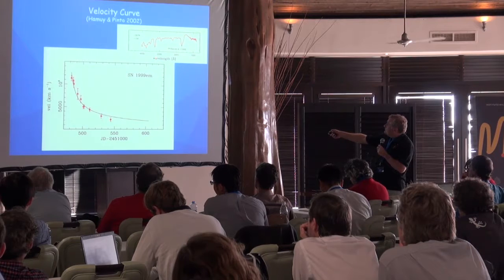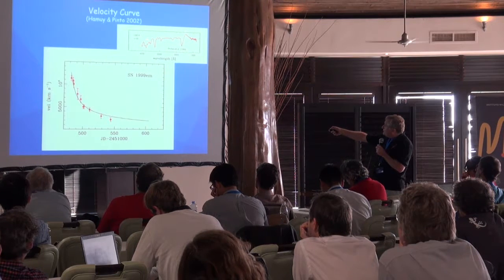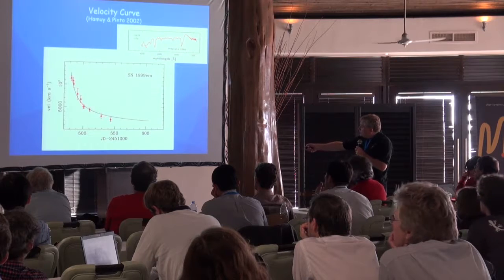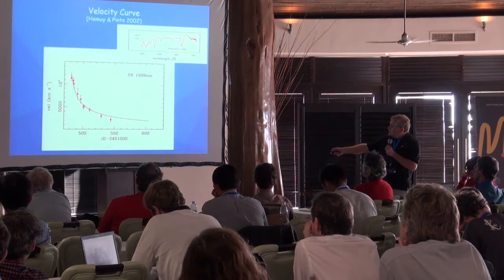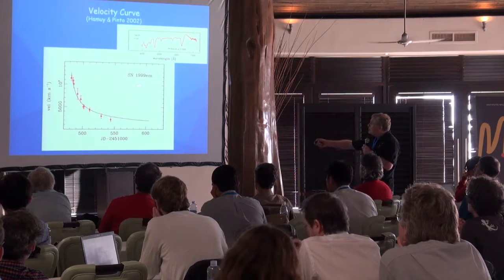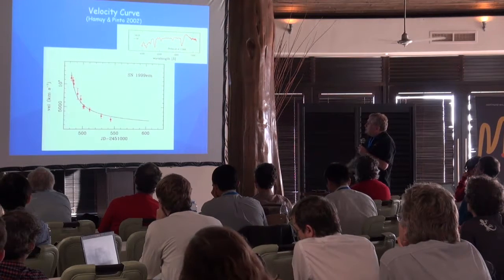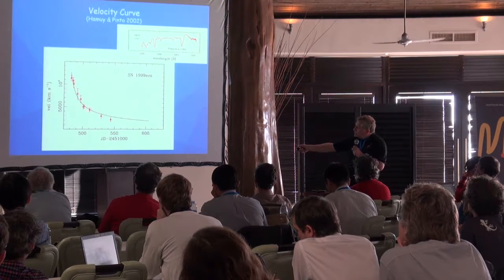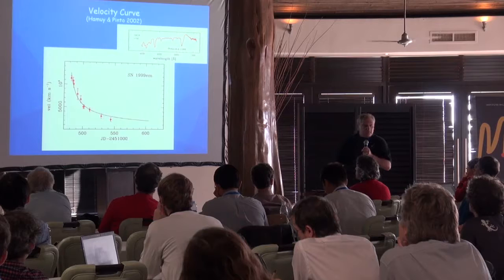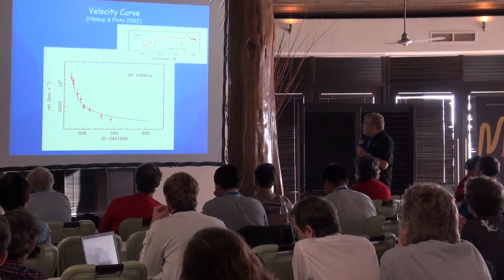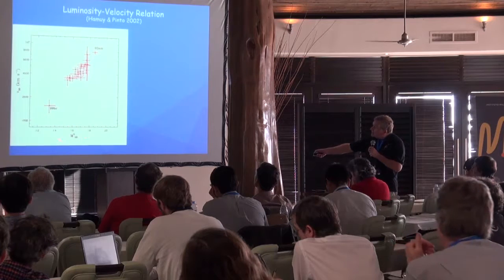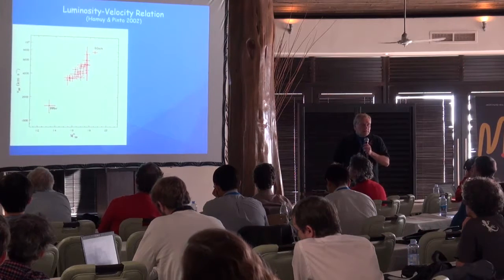You can measure the expansion velocity from the spectrum at any given time, from the minimum of the P-Cygni profiles using your favorite line. You can get an evolution with time of the expansion velocity — in this case, velocity measured from the iron feature for one particular supernova. When you interpolate to a favorite epoch, say 50 days after explosion, velocities correlate well with the absolute magnitude at the same epoch.